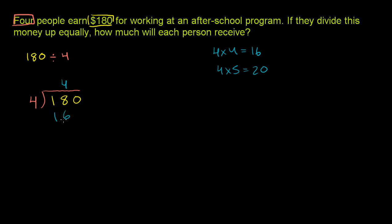4 times 4 is 16. And now we subtract. We essentially find the remainder here. 18 minus 16 is 2.